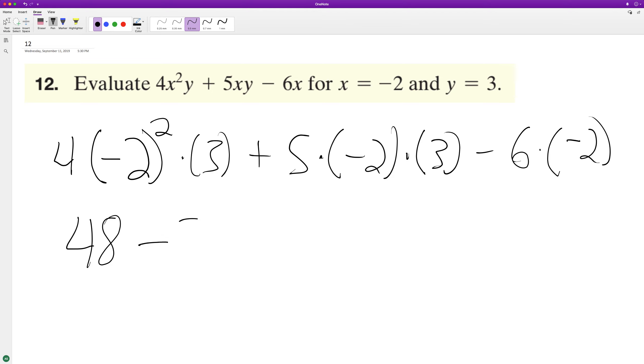And then negative 6 times negative 2 is plus 12. So ultimately, 48 plus 12 is 60 minus 30 is equal to 30. And that's it. Okay, I hope this helped you out. Appreciate you watching and have a great day.